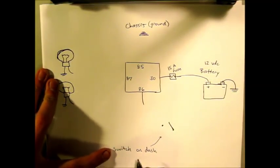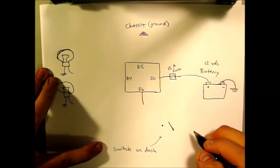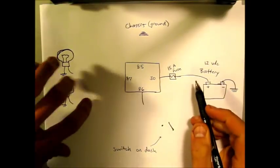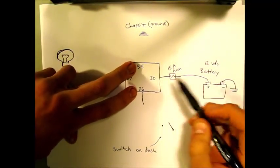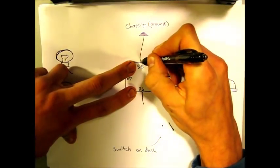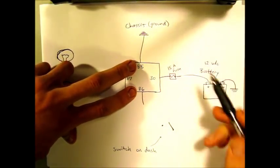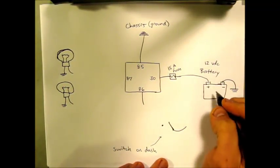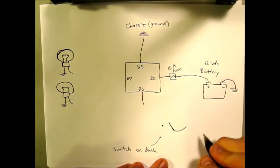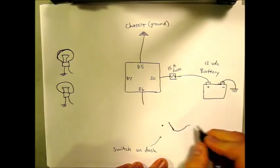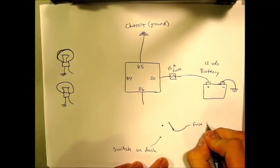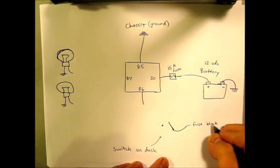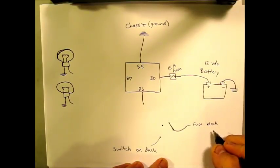So for our relay, we need our 30 to have an input, so we're going to give it 12 volts from the battery. And then let's say we mounted this switch here on the dash. We know that the switch is going to need power because 85 and 86 work together and that needs to make a complete circuit. So your 85 we're going to run to ground, and that means we need power on this side.